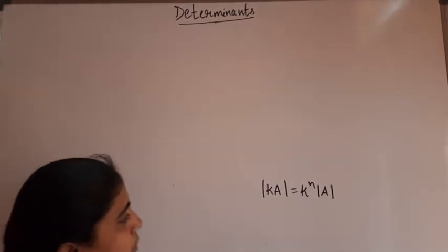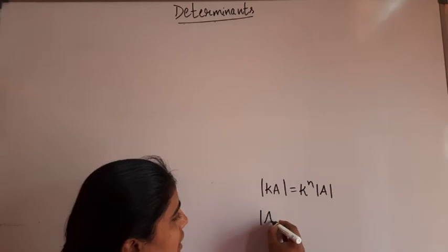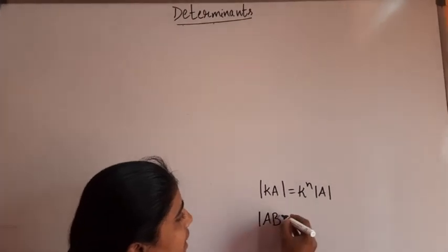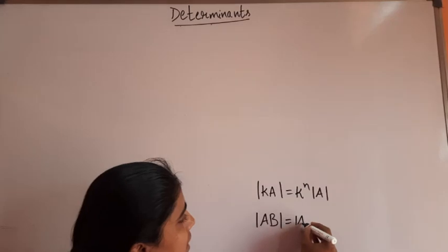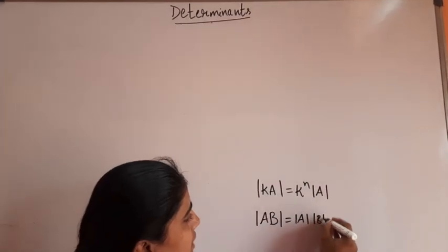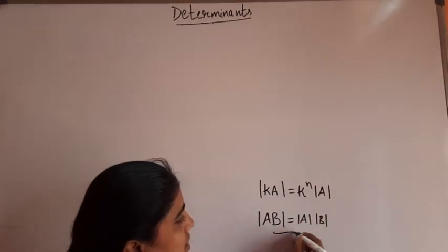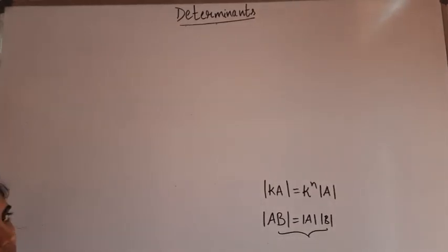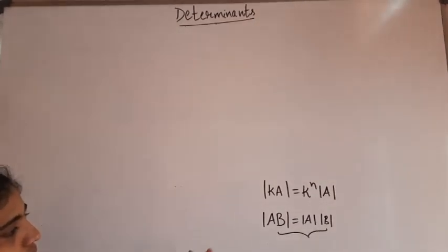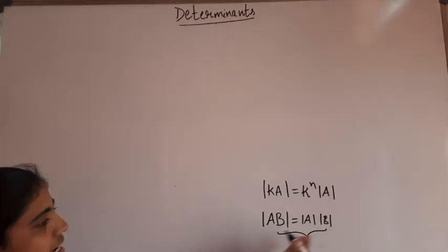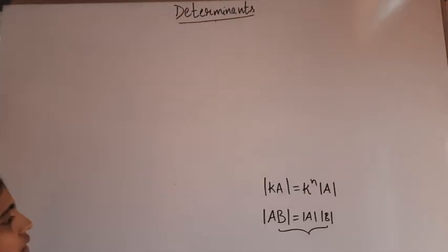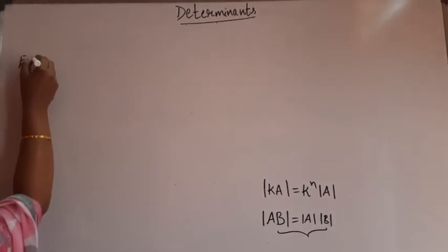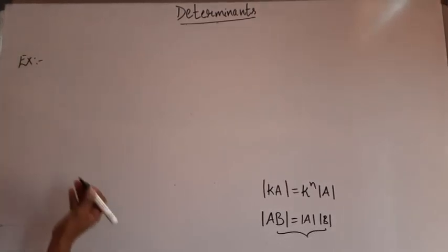In a previous class I also gave one important result: determinant of AB equals determinant A times determinant B. Let us now verify whether this condition is satisfied by considering an example of a 2×2 matrix.